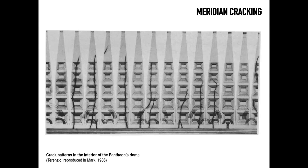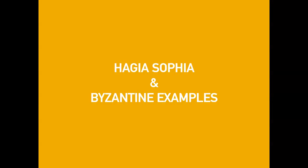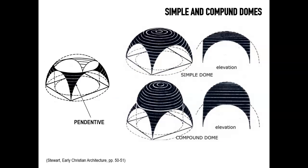This understanding of ribbed domes provides the foundation to discuss the Church of Hagia Sophia in Constantinople. This church applies Roman construction techniques but takes them to another level. The novelty is that it is a compound dome. While the Pantheon is a simple spherical dome with a tendency to burst at the base, the Byzantine churches developed a new technique: a dome that sits on a portion of a lower dome. This lower dome is reduced to four triangular portions of a sphere known as pendentives.